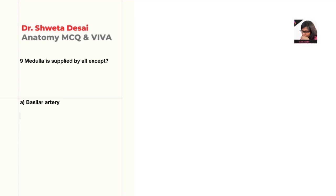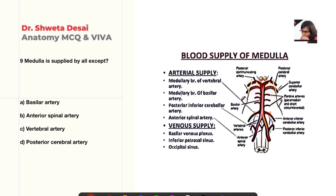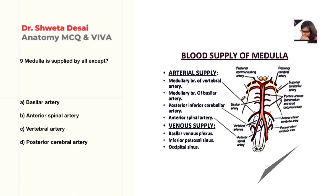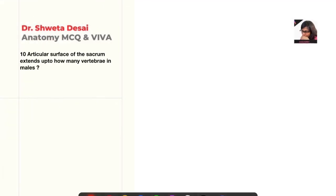Medulla is supplied by all except — basilar artery, anterior spinal artery, vertebral artery, or posterior cerebral artery? The correct answer is posterior cerebral artery; it does not supply the medulla.